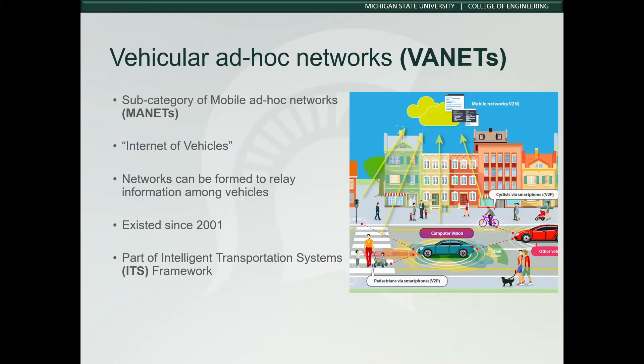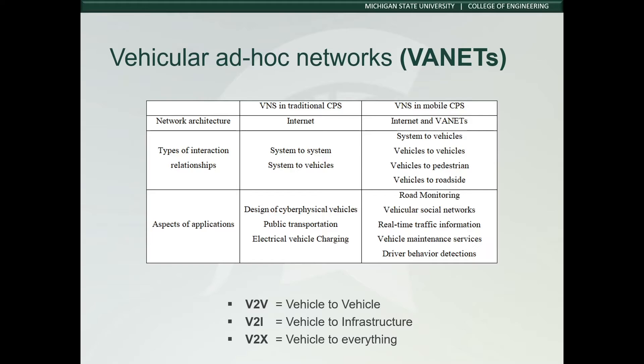Vehicular ad hoc networks, VANETs, is a subcategory that was created by applying the principles of mobile ad hoc networks. You may have heard of this referred to as the less specific term called internet of vehicles. VANETs are the spontaneous creation of a wireless network of mobile devices to the domain of vehicles. These networks can be formed to allow information to be relayed among cars and have existed since 2001. They are a key part of the intelligent transportation system framework.